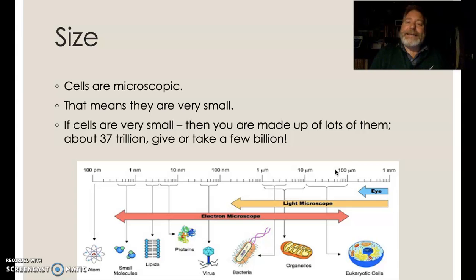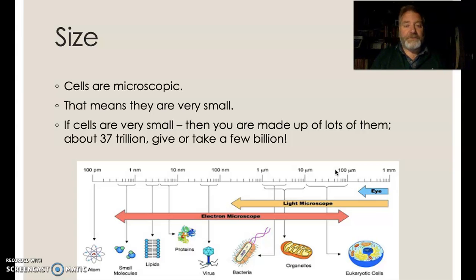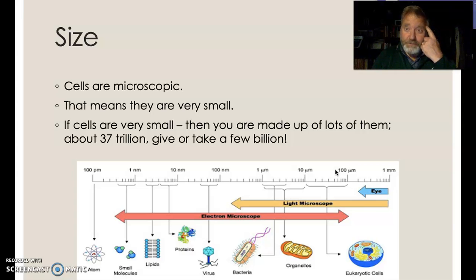Cells are really really small — we tend to call them microscopic and we see most cells under a microscope. There are so many of them that as a healthy adult you are about 37 trillion cells, give or take a few billion.